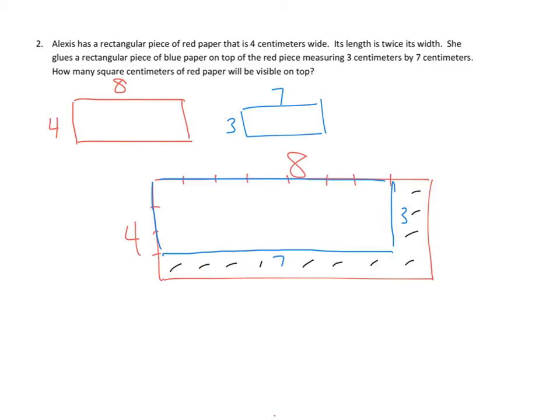So if we add those up, I think that's one, two, three, four, five, six, seven, eight, nine, ten, eleven. So my tentative answer is eleven square centimeters that we have visible on top.